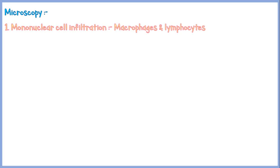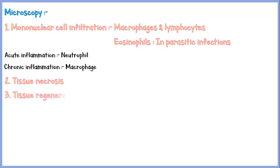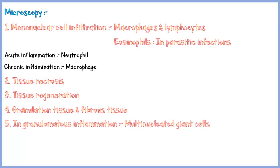Microscopically, mononuclear cell infiltration can be seen — predominantly macrophages and lymphocytes. In parasitic infections, there may be more eosinophils as well. In acute inflammation, the predominant cell type is neutrophil; however, in chronic inflammation, it is the macrophage. Tissue necrosis is another feature of chronic inflammation, along with tissue regeneration. As the repairing process progresses, granulation and fibrous tissue are also seen in the area. And in granulomatous inflammation, there may be multi-nucleated giant cells as well.